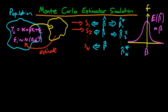We also like estimators to have as low a variance as possible, because a lower variance means you're going to get closer to the true value more of the time. And we'd like our estimator to be at least consistent, meaning that as the sample size increases towards infinity, the estimator tends in value to the true population value. The problem in econometrics is that we normally don't know the population process, which makes it hard to evaluate what properties our estimator actually has. This is where Monte Carlo simulation comes in very handy.